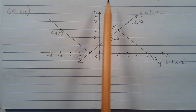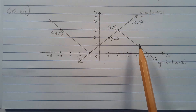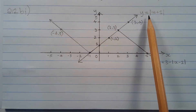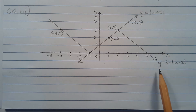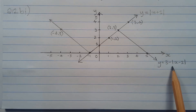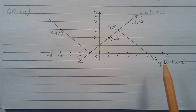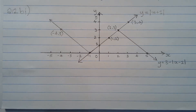The following diagram shows the graph of y equals the absolute value of x plus 1 and the graph of y equals 3 minus the absolute value of x minus 2 on the same set of axes. It is important to draw both graphs as neatly as possible and to scale.